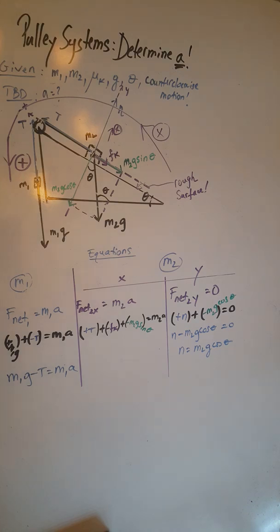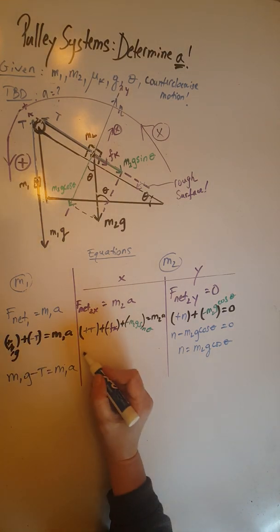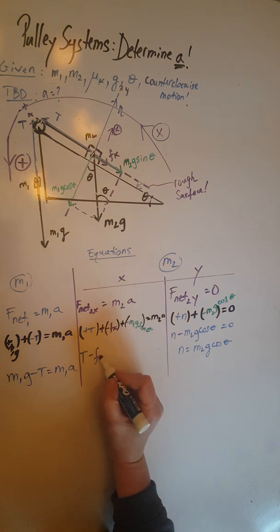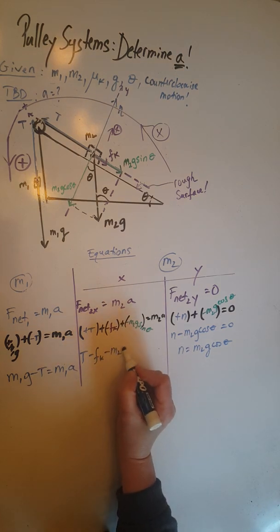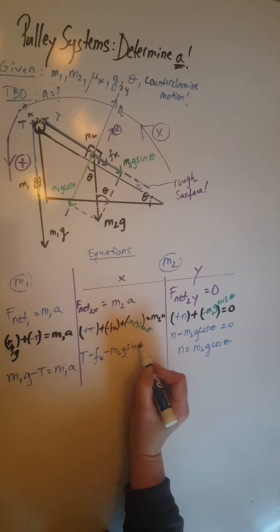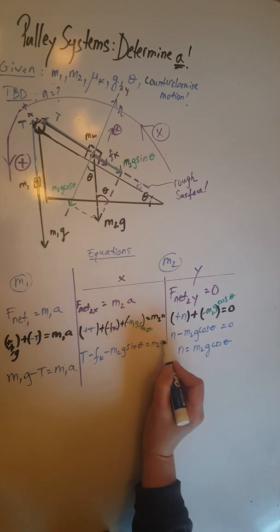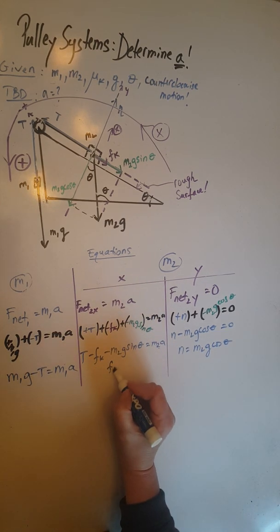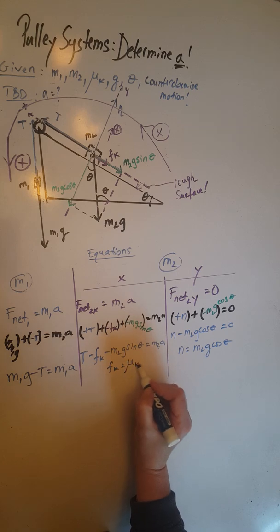When we simplify this to get a scalar equation, we are going to end up with T minus fk minus m2g sine theta equals m2a. But fk, we know, is the product of mu k and N.